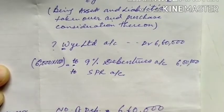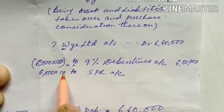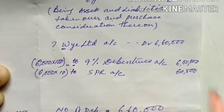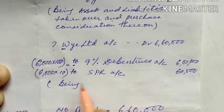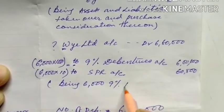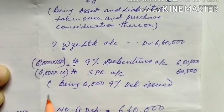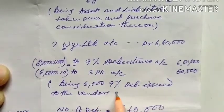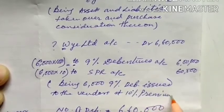SPR = 6000 × ₹10 (10% of ₹100) = ₹60,000. Being 6000 nine percent debentures issued to the vendor at 10% premium.